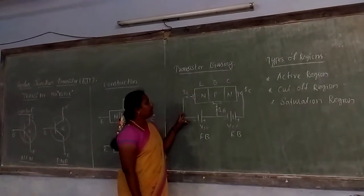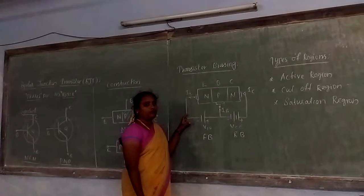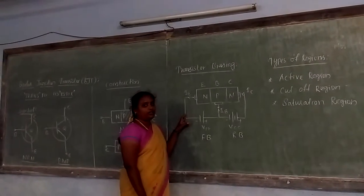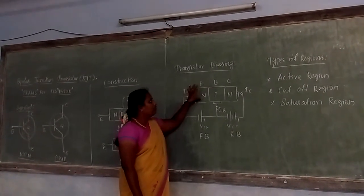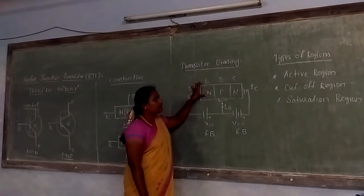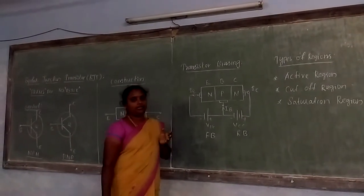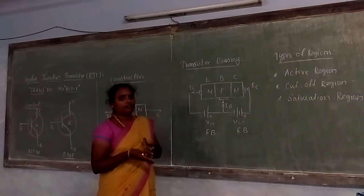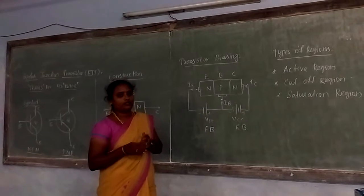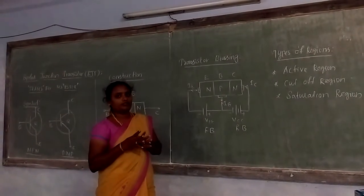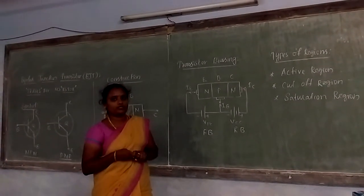For the NPN transistor, electron flow is the majority carrier and hole flow is the minority carrier. For the PNP transistor, hole flow is the majority carrier and electron flow is the minority carrier. These are the major differences in the internal operation of NPN and PNP transistors.